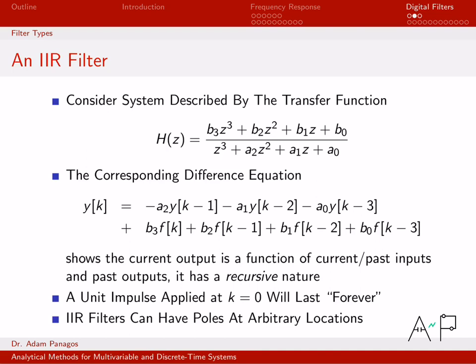So the key thing about IIR filters is their output is a function of previous outputs. Their impulse response lasts forever—they never completely die out. And in terms of their pole locations, you can put poles wherever you would like.